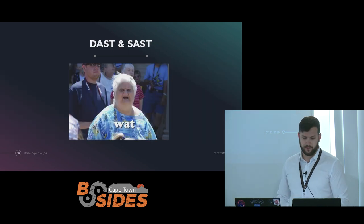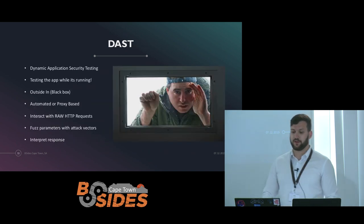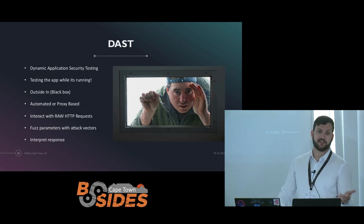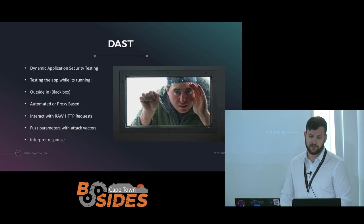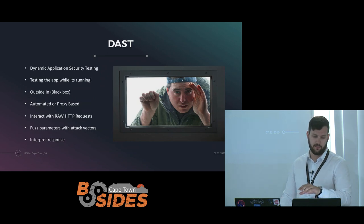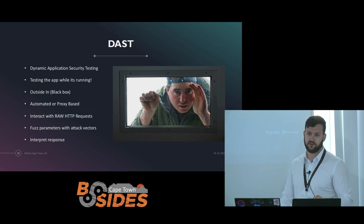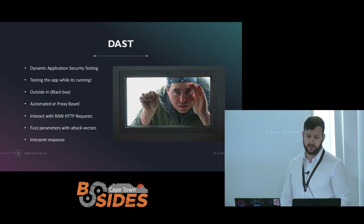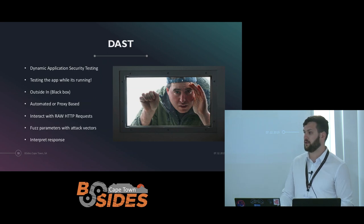These tools are divided into a couple of categories: DAST and SAST. DAST stands for Dynamic Application Security Testing — essentially testing the application while it's running, from the perspective of a user or a malicious attacker. It's black box, outside-in, and generally based on two methods: automated or proxy-based. Think of OWASP ZAP as a proxy-based tool, and Arachni or Acunetix as very automated, point-and-click tools where you give it the information and let it generate results. They interact with raw HTTP requests, fuzz the parameters with a list of vectors, and interpret the response to determine if a vulnerability has been found.